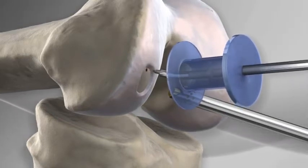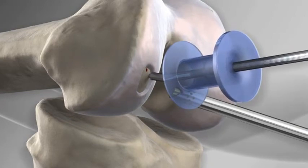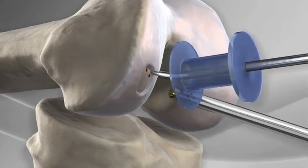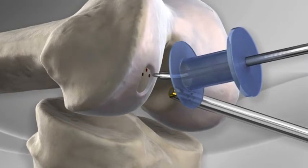The pick is used to punch small holes in the bone where the lesion is located. These holes allow blood from inside the bone to cover the defect.